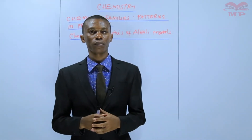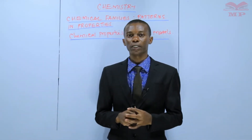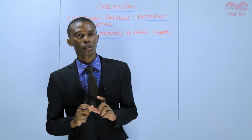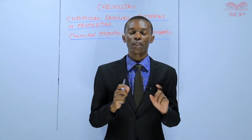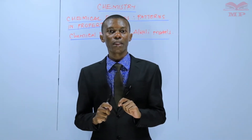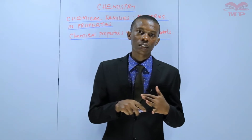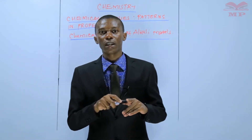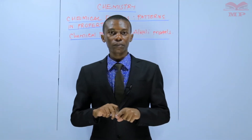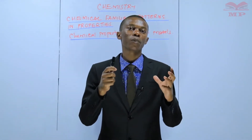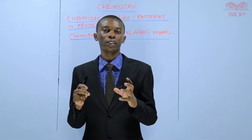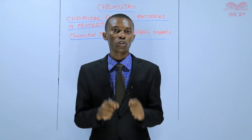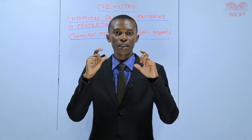The subtopic for this lesson is Chemical Properties of Alkali Metals. In the previous lesson, we were discussing the physical properties of alkali metals. These physical properties were ease of cutting, appearance, melting and boiling point, electrical conductivity, and ionization energy. Ensure that you have understood the physical properties and the trends in those physical properties, because you are going to use them later in this topic.